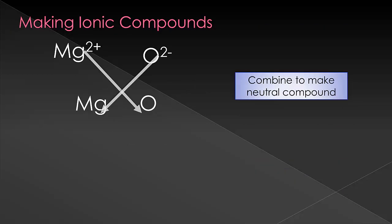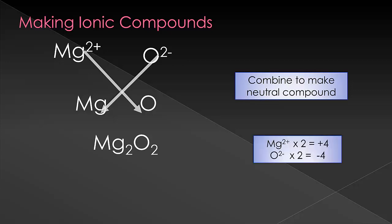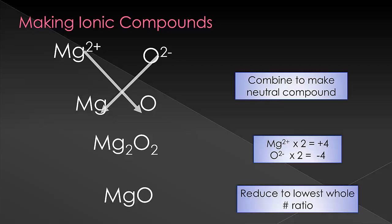Here's an example where blindly following the criss-cross trick can get you into trouble. Ionic compounds always need to be the lowest whole number ratios. Be sure to note that this is not true for covalently bonded compounds. Now, if we follow the trick, like in the previous slide, we will get Mg2O2. While this does give us a neutral compound, it is not the lowest whole number ratio, so we must reduce down to MgO.